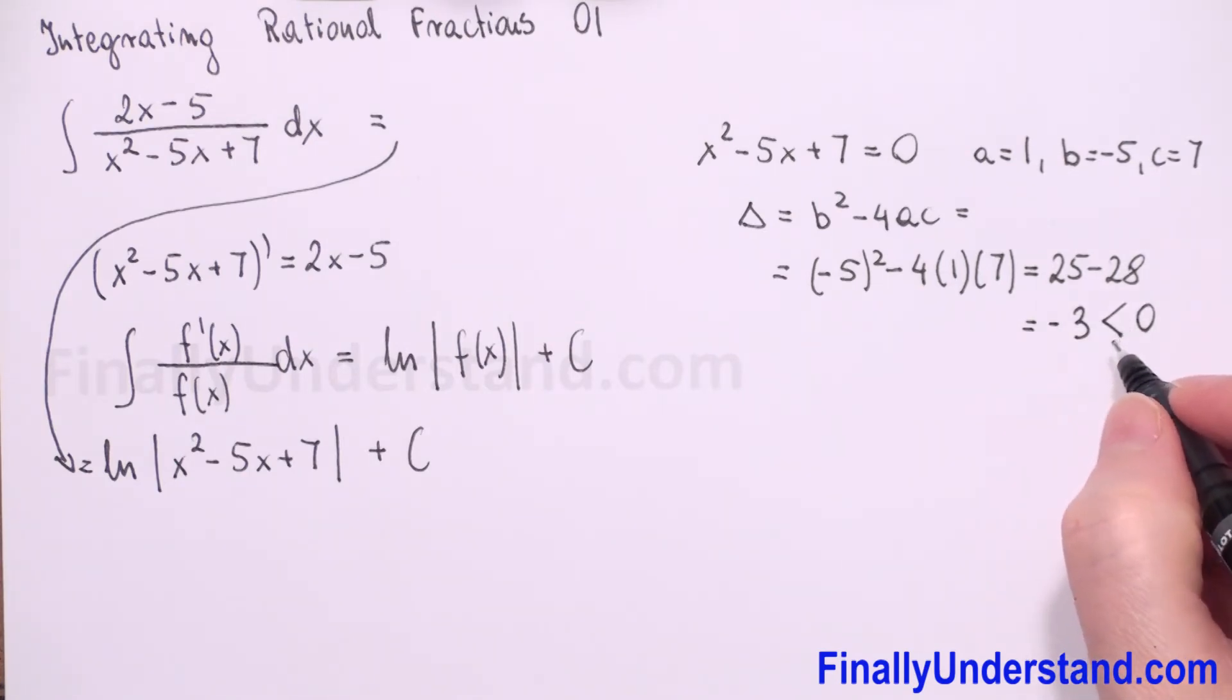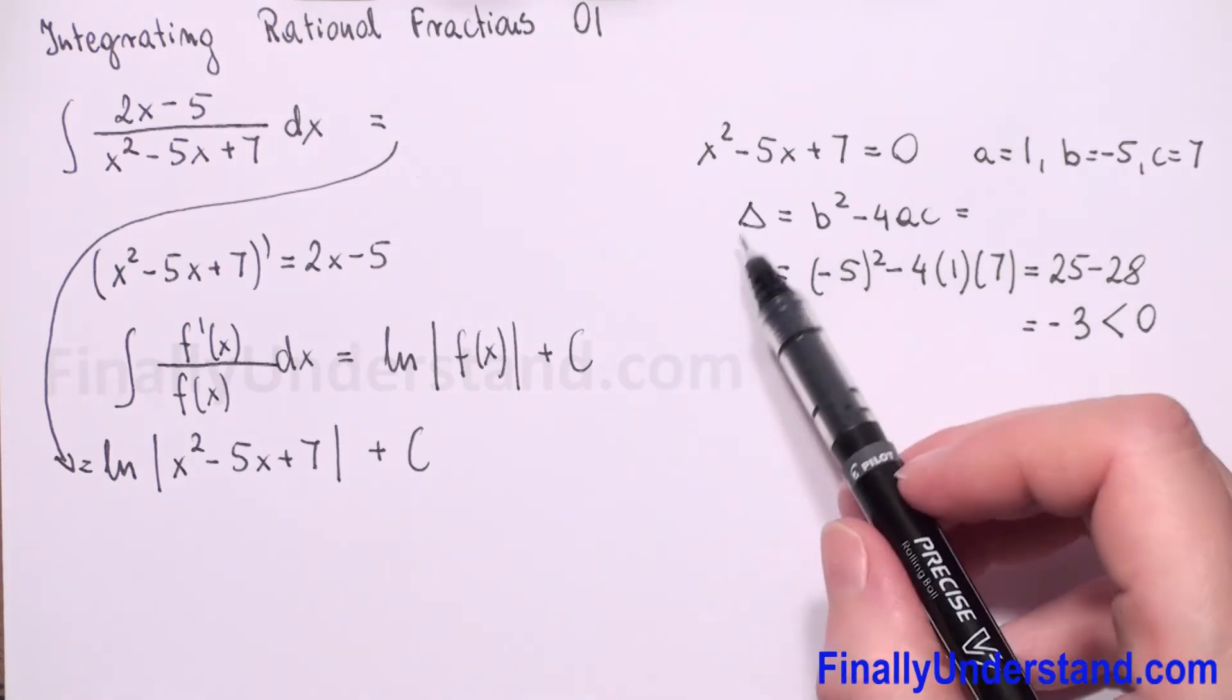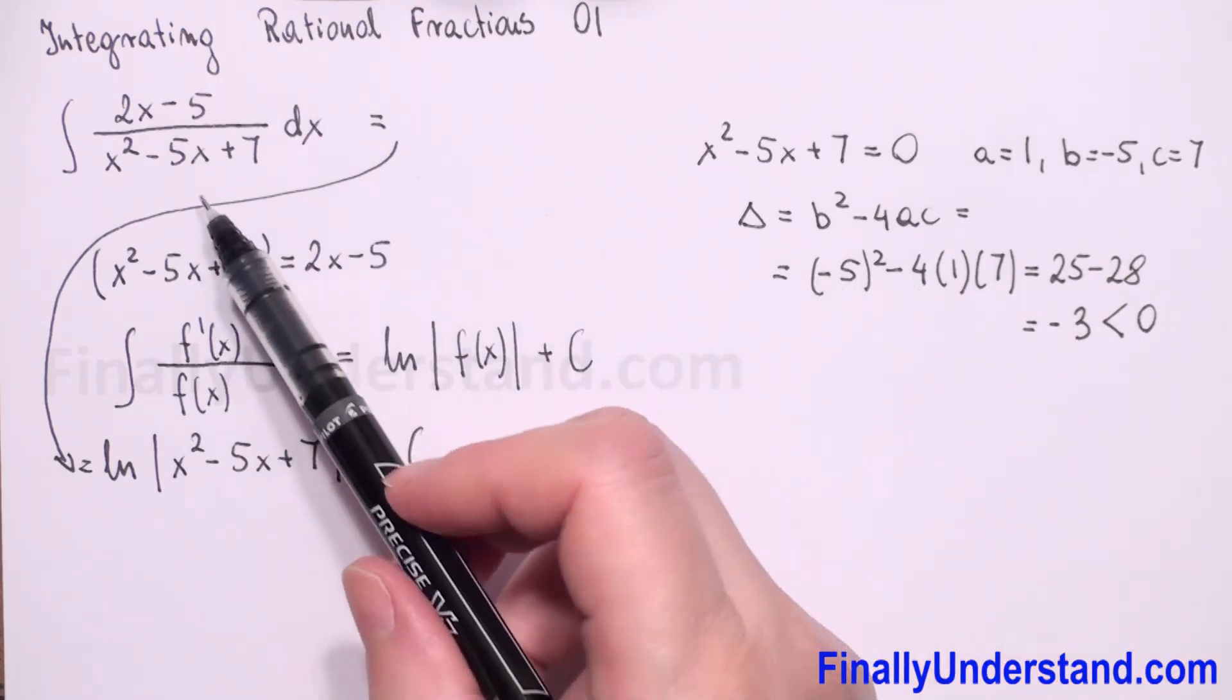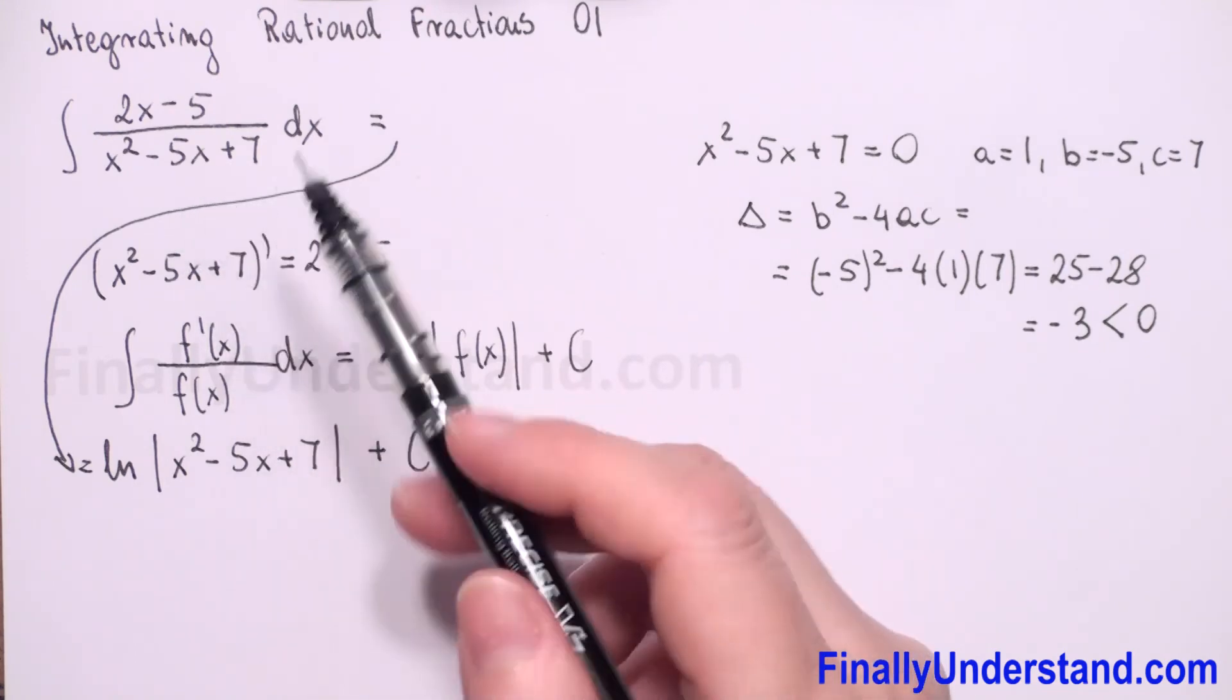So we see that our equation doesn't have real solutions. When delta is less than 0, we don't have real solutions. So our denominator will never be equal to 0.